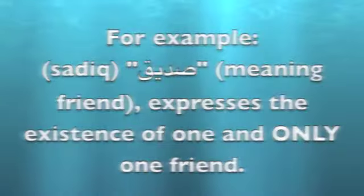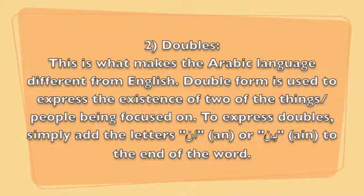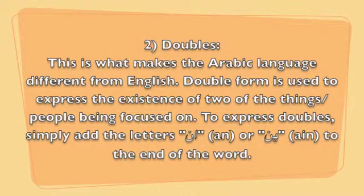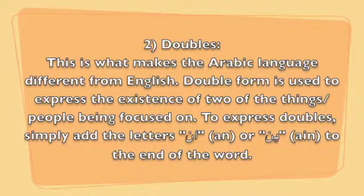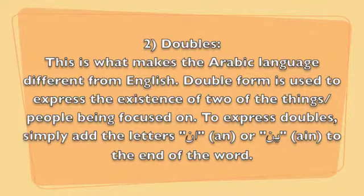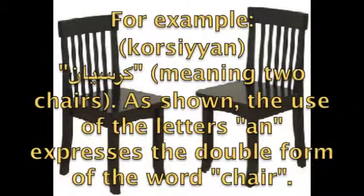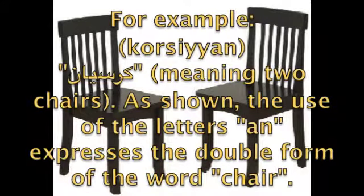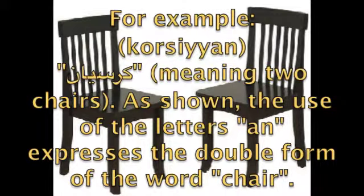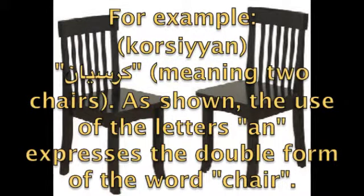2. Doubles. This is what makes the Arabic language different from English. Double form is used to express the existence of two of the things or people being focused on. To express doubles, simply add the letters 'an' or 'ayn' to the end of the word. For example, 'cursillan,' meaning two chairs. As shown, the use of the letters 'an' expresses the double form of the word chair.